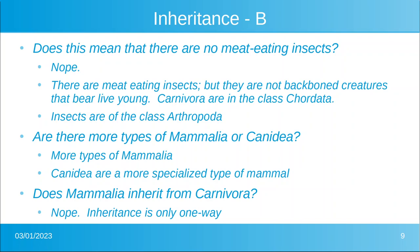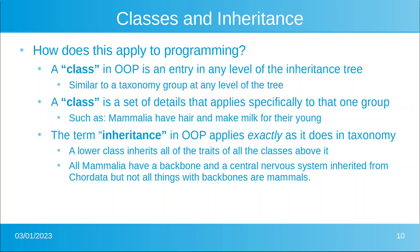How does this apply to programming? A class in object-oriented programming is an entry at any level of that inheritance tree — similar to a taxonomy group at any level. Carnivore is a class, mammal is a class, jointed-leg arthropods is a class, multicellular organisms is a class. A class is a set of details that applies specifically to one group and separates that class from a different one.